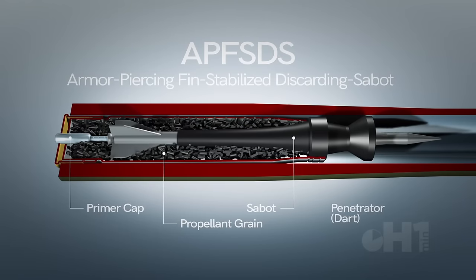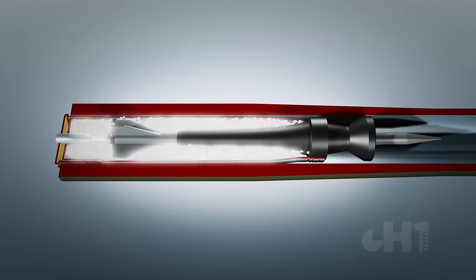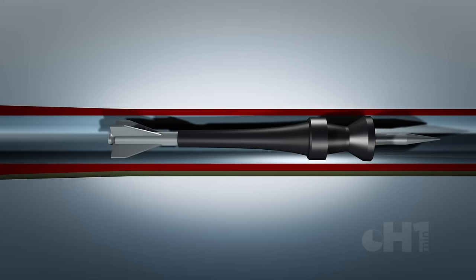A sabot is an outer shell which helps propel a heavy hardened dart. As the shell leaves the barrel, the supporting sabot peels away with only the dart flying to the target.